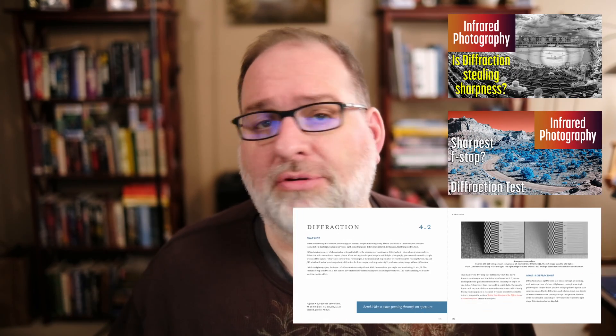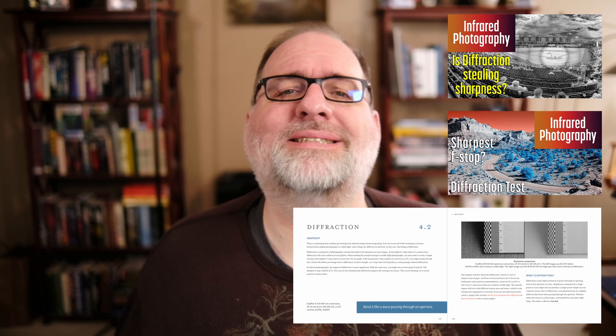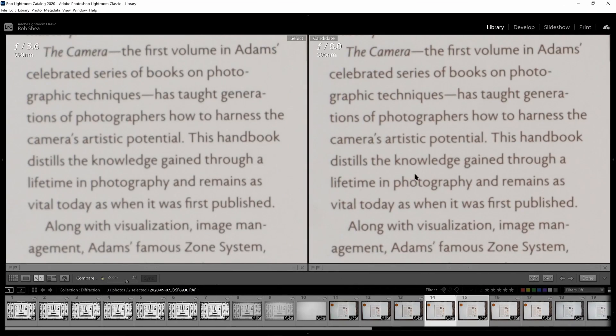Are your images sharp? How do you know if diffraction is impacting image sharpness? I've dedicated multiple videos and an entire book chapter to diffraction. But when exactly does diffraction occur? I've done diffraction testing for specific cameras, but is that practical for everyone? Can you calculate when diffraction will appear for a particular camera sensor, infrared filter, or f-stop? I didn't think it was practical, but I was wrong. I found a way.